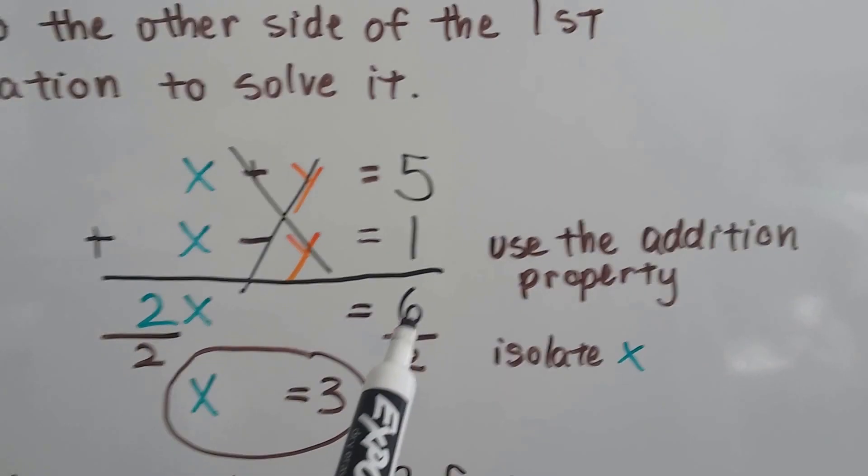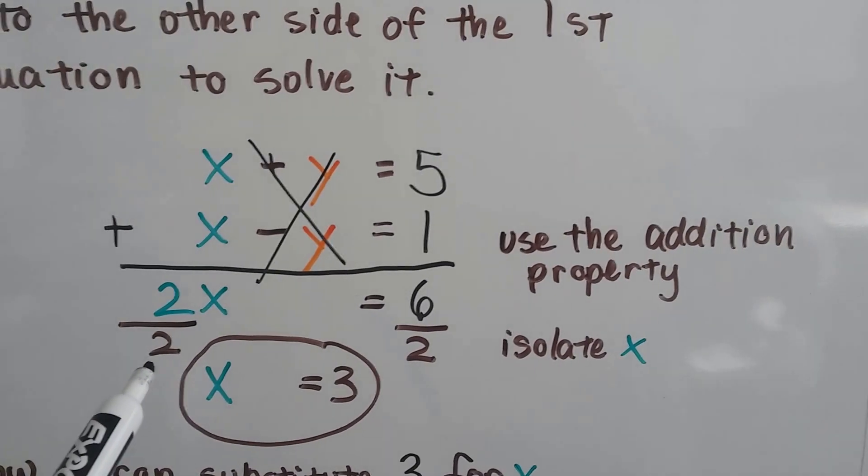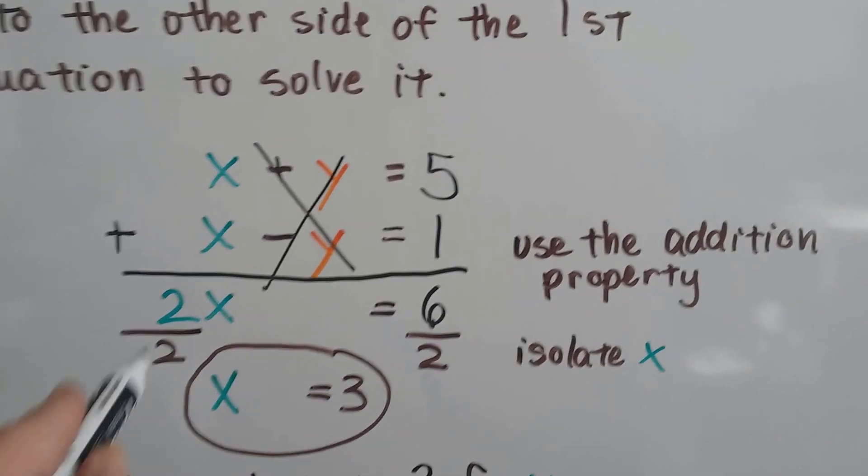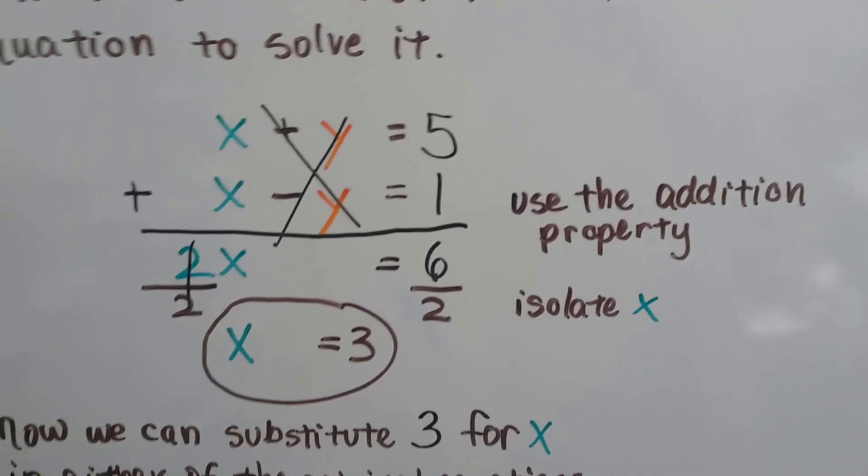And then, 5 + 1 is 6, so we end up with 2x = 6. Now we just isolate the x by dividing both sides by this coefficient, 2. It gives us our buddy, the invisible 1, so we have 1x = 3.